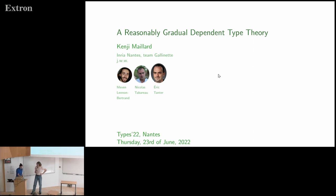Our next speaker is Kenji Maillard, and he will talk about reasonably gradual dependent type theory.